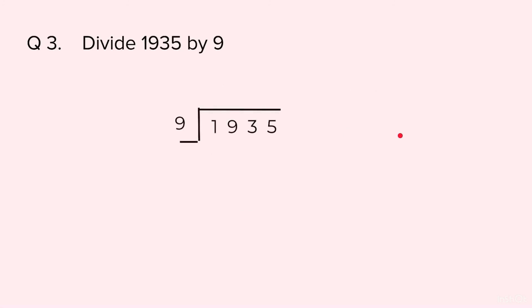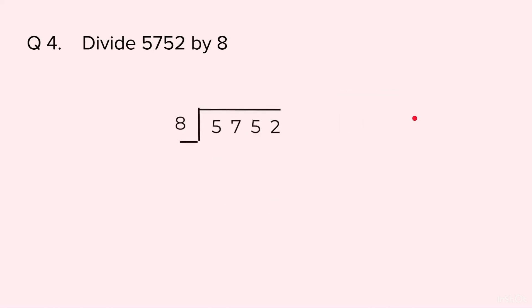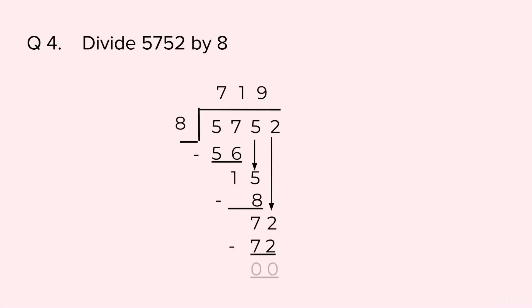Question 3: 1935 divided by 9. The quotient is 215 and the remainder is 0. Question 4: 5752 divided by 8. The quotient is 719 and the remainder is 0.